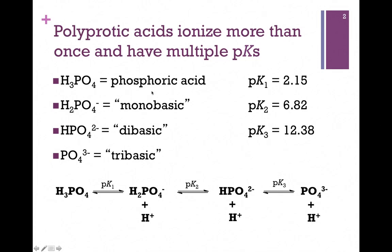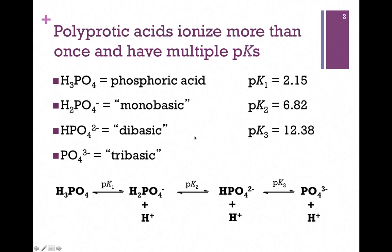As phosphoric acid donates the first proton, it becomes monobasic, H2PO4⁻ — that is, basic by one proton — and that has an associated pK1 of 2.15. As it donates the second proton, it becomes dibasic, HPO4²⁻, and that has pK2 of 6.82.